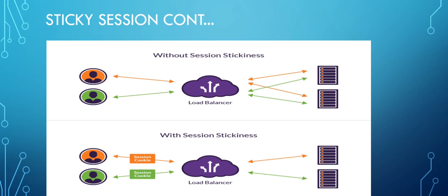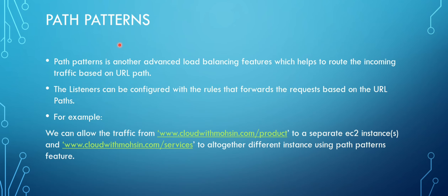Now let's understand what path patterns are. Path patterns is another advanced load balancing feature that helps to route incoming traffic based on URL paths. The listeners can be configured with rules that forward requests based on the URL path. For example, suppose my website is www.cloudwithmosin.com and it has two different pages — products and services.